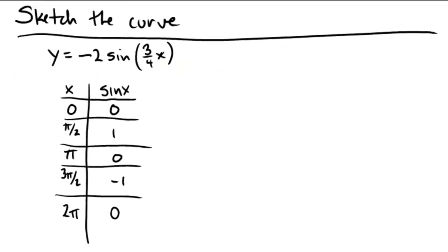More graphing of trig functions. We're going to use our tricks again using all of our functional transformation techniques that we've talked about in the past. So with sketching the curve here, we have a vertical compression stretch by negative 2, so it's also going to have a flip over the axis. The nice way about doing it my way is that all I'm going to do is multiply those y's by negative 2.